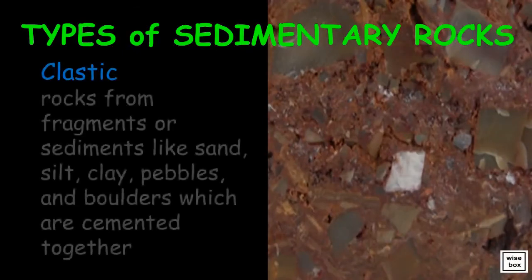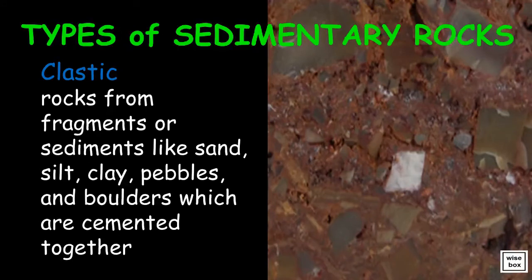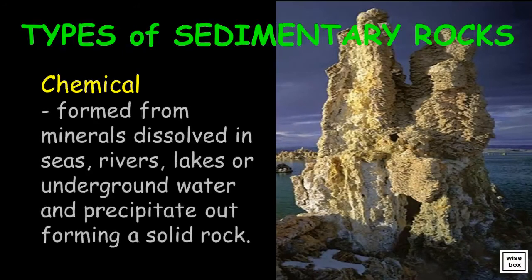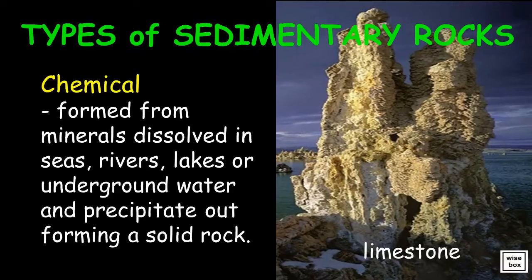Clastic rocks come from fragments or sediments like sand, silt, clay, pebbles, and boulders, which are cemented together. One example of a clastic rock is breccia. Chemical rocks are formed from minerals dissolved in seas, rivers, lakes, or underground water, and precipitate out forming a solid rock. An example of a chemical rock is limestone, composed of mineral calcite, which comes from dissolved calcium carbonate that comes out of solution as the lake evaporates. Halite and gypsum minerals also form this way.